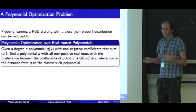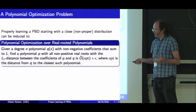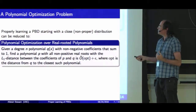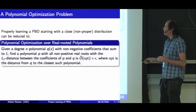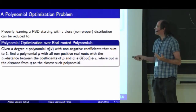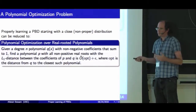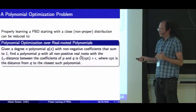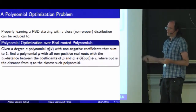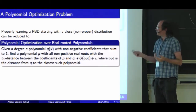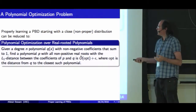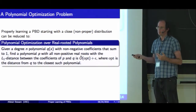Using the non-proper learning algorithm outlined in the last talk, we can reduce this problem to a problem in polynomial optimization: given a polynomial which is close to a polynomial with all real roots, we want to find a polynomial with all real roots that's close to it. The closeness here, because it's total variation distance between distributions, corresponds to L1 distance between the coefficients of the polynomials.